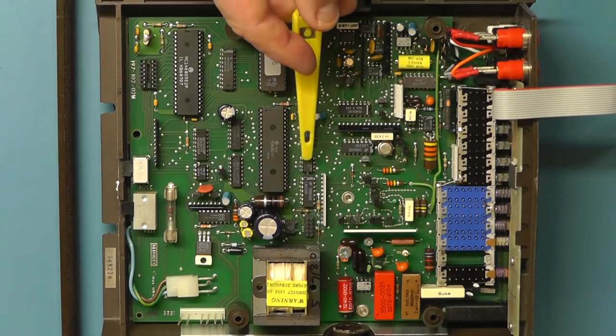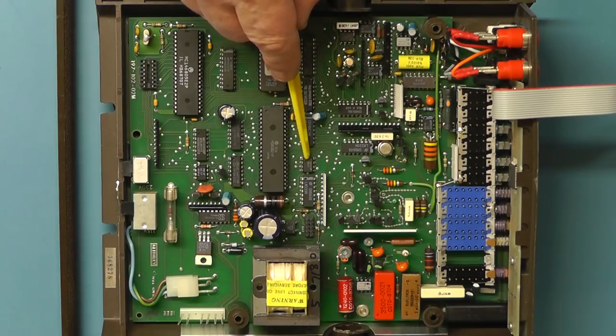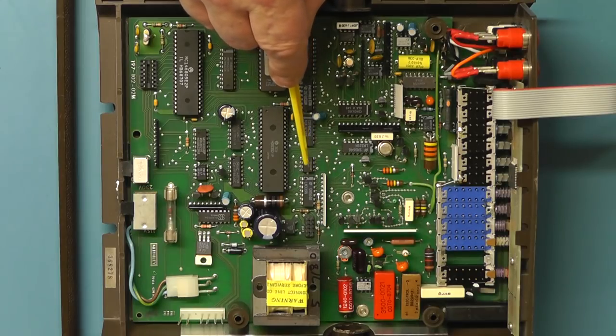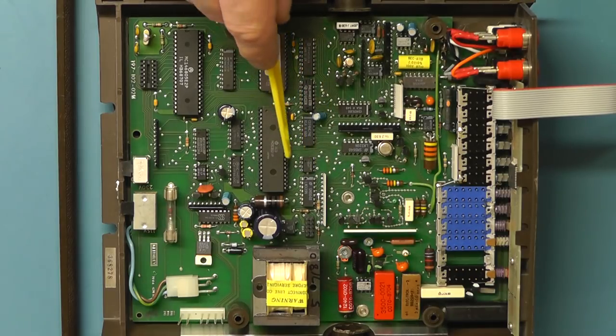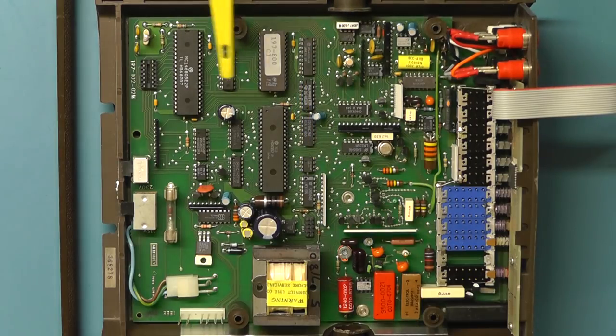The other memory chip you can see there as before is the non-volatile memory there which is electrically alterable and that is used to store the calibration data for the meter. As we saw on the 175 the calibration is done electronically from the front panel and there is no presets within the meter itself.